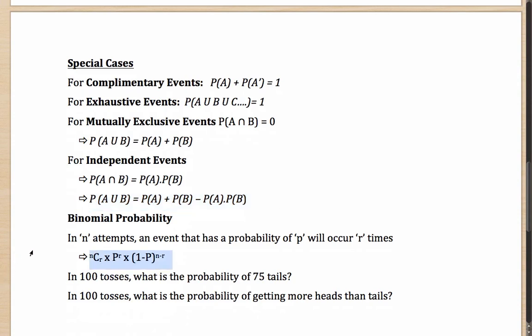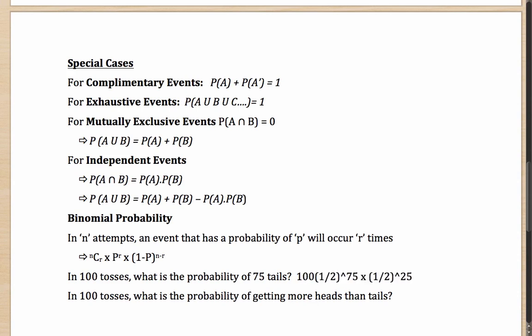If I change the question to: what is the probability that in a hundred tosses there will be 75 tails? The tail probability of half needs to happen 75 times — that's half to the power of 75. The other 25 times you need to get a head — that's half to the power of 25. But is the solution complete? No. Your answer is going to be 100C75 multiplied by these values, because you need to select which 75 of the 100 cases give a tail — and that can be done in 100C75 ways.